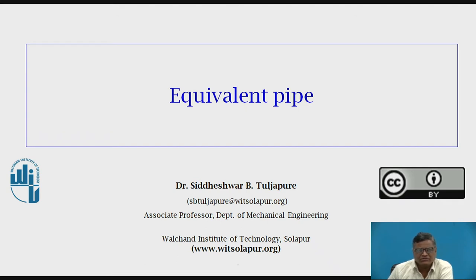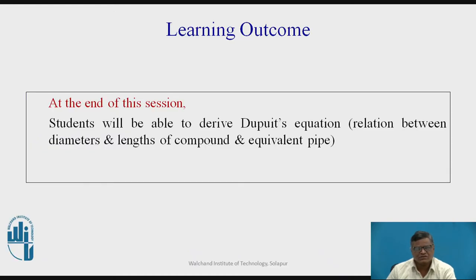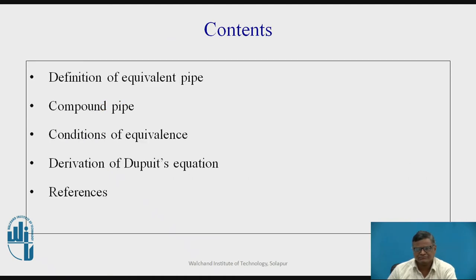So today we are going to deal with the topic: equivalent pipe. The learning outcome of this session — at the end of this session, students will be able to derive Dupuit's equation, which is the relation between the diameters and lengths of compound and equivalent pipe. The contents are: definition of equivalent pipe, compound pipe, conditions of equivalence, derivation of Dupuit's equation, and lastly the references.